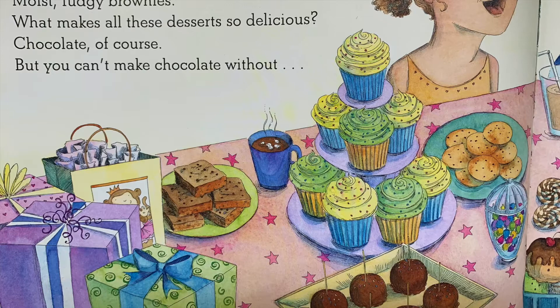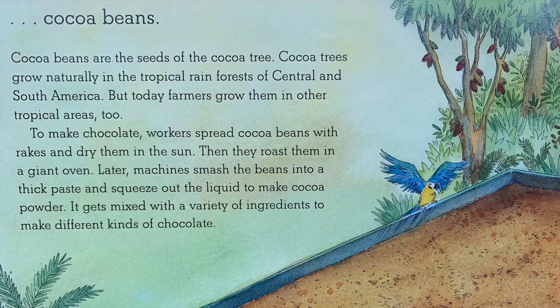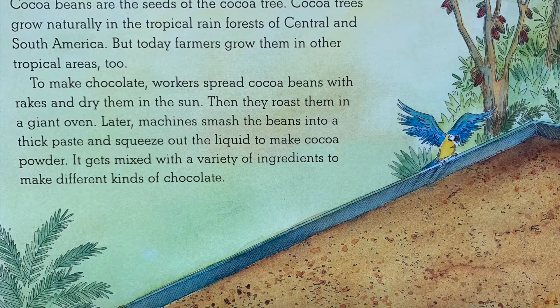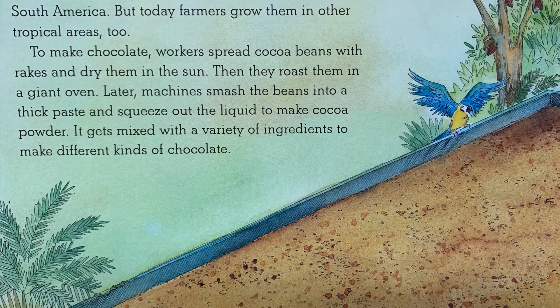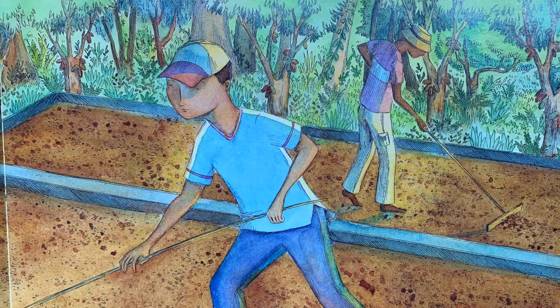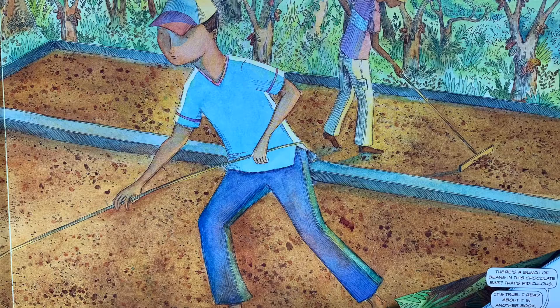Cocoa beans. Cocoa beans are the seeds of the cocoa tree. Cocoa trees grow naturally in the tropical rainforests of Central and South America, but today farmers grow them in other tropical areas too. To make chocolate, workers spread cocoa beans with rakes and dry them in the sun, then roast them in a giant oven. Later, machines smash the beans into a thick paste and squeeze out the liquid to make cocoa powder, which gets mixed with a variety of ingredients to make different kinds of chocolate.